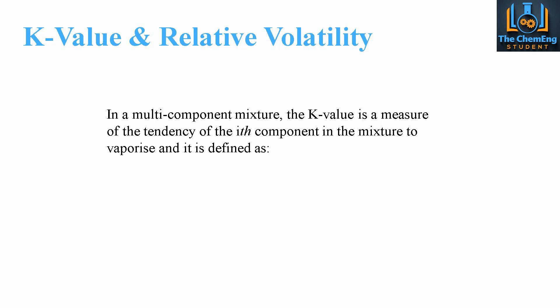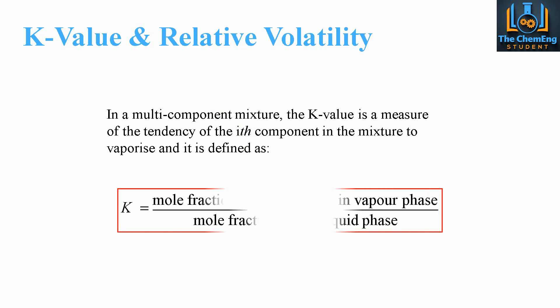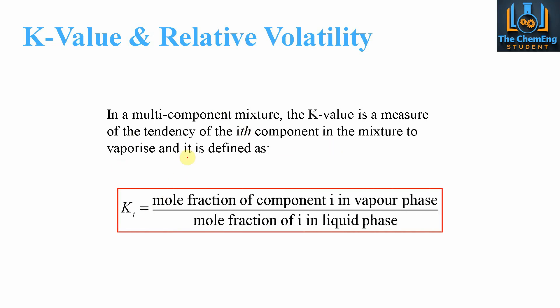If we consider the K value first, when we talk about multicomponent mixtures, it's essentially the tendency for a compound — the i-th compound — within the mixture to vaporize. It can be defined as the mole fraction of component i in the vapor phase divided by the mole fraction of component i in the liquid phase. It's essentially the ratio of how much of that compound is in the vapor phase compared to the liquid phase.